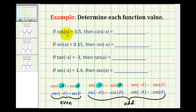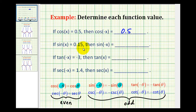For the first one, since the cosine function is even, if cosine x equals 0.5, then cosine of negative x is also equal to 0.5 — the function values would be the same. However, the sine function is odd, so if sine x equals 0.15, then the sine of negative x is equal to negative 0.15. If we change the sign of the input, then the function values will be the opposite sign.